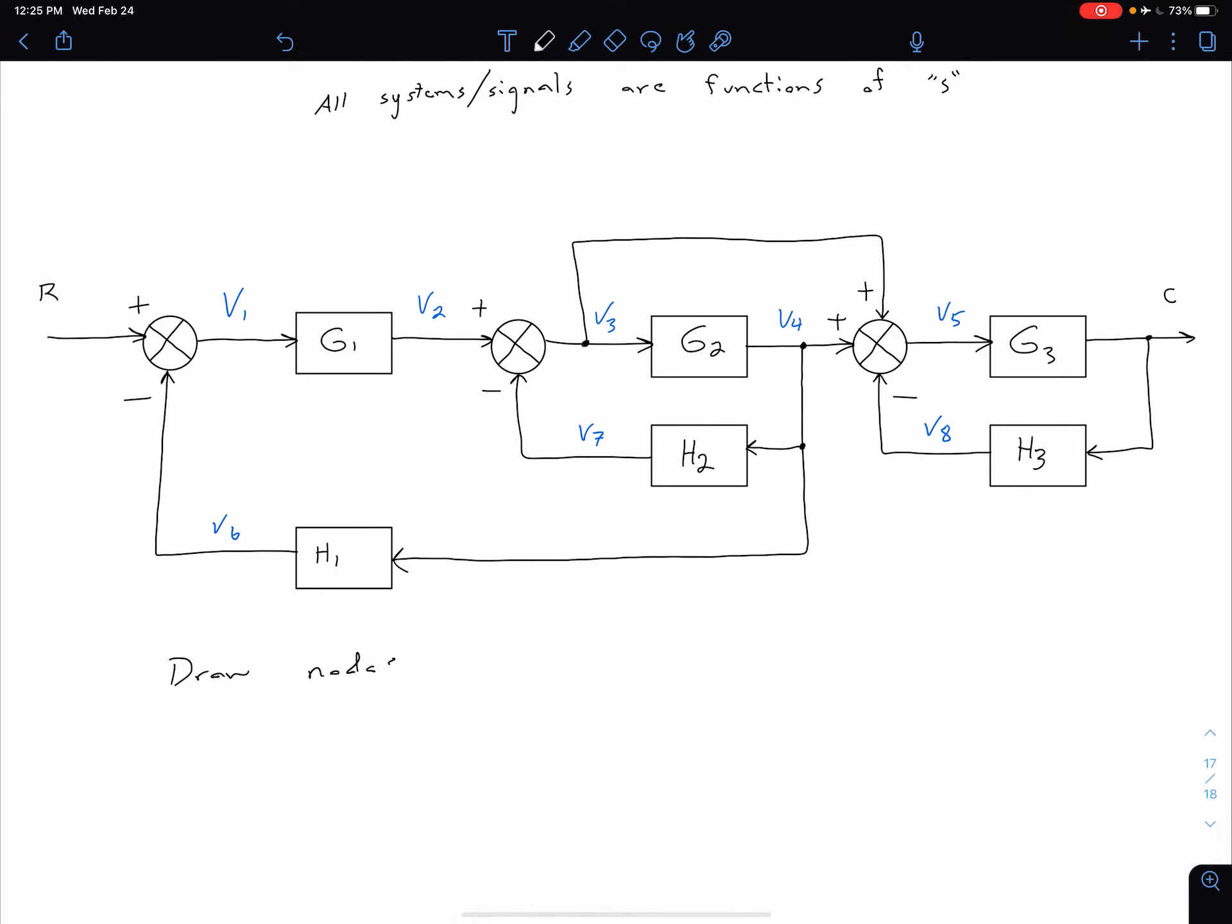Because remember in our signal flow graphs, our signals are represented by nodes and our blocks are going to become branches. So draw nodes representing signals.